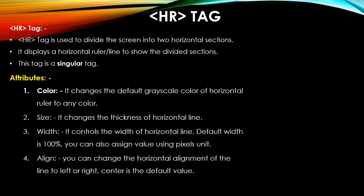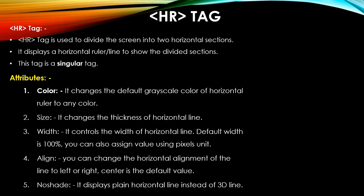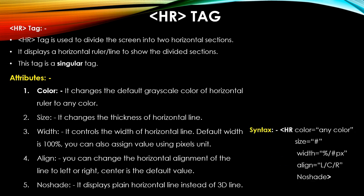The align attribute of hr aligns the horizontal line to left, center, or right — center is the default. This alignment change is visible only when the width is less than 100 percent. The last attribute is noshade — by default, the horizontal line is displayed with a 3D effect. Using noshade removes this shadow and displays a plain horizontal line instead.